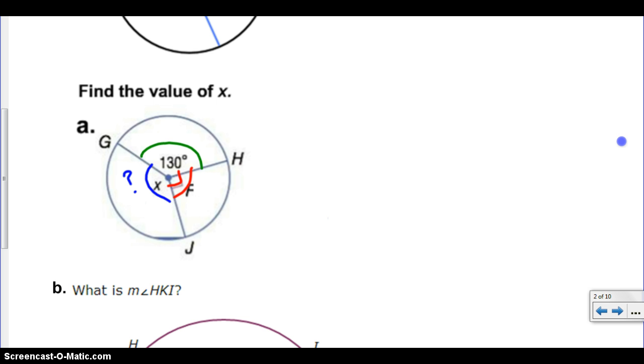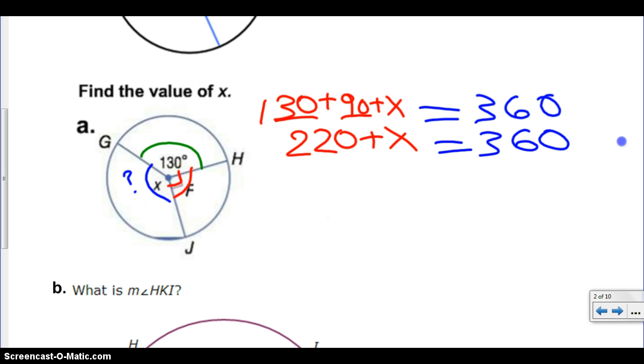Well, if I know they all add up to 360, what I think I can do is just take 130, add that to 90, and since I don't know what X is, I'm just going to add X. And those should all add up to 360. From here, I just combine my like terms, which is obviously the 130 and the 90. We subtract the 220 now that we've combined like terms, and that will give us our answer. 360 minus 220 is quite obviously 140 degrees.